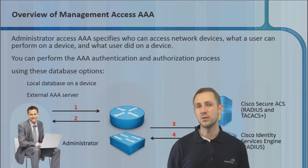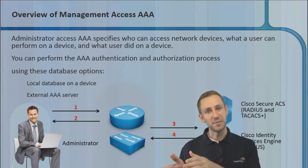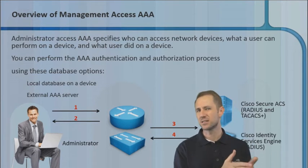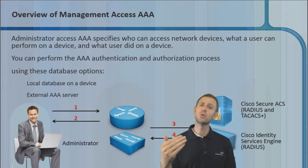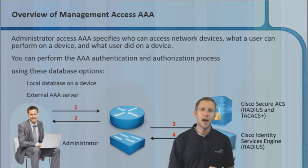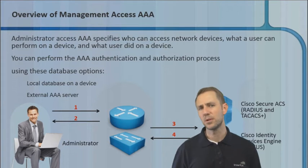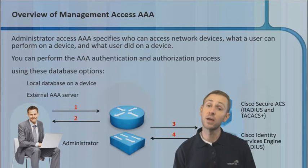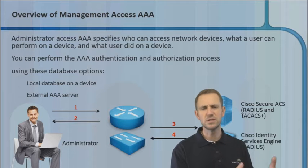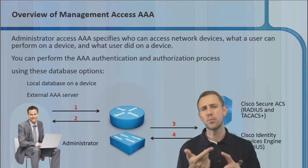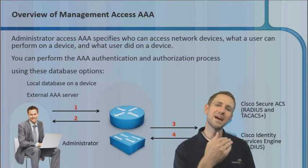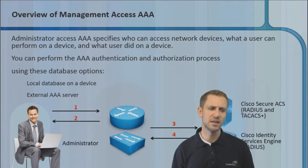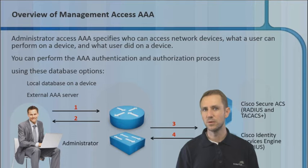Dynamic authorization policies refer to the dynamic interpretation of context. Basically, we know who you are, but we want to know more information about you. When someone's authenticating, there are servers out there — like the Identity Services Engine, or prior to that, ACS. What types of criteria could a AAA server look at to determine the level of authorization you should receive? What types of attributes do you think it might consider?